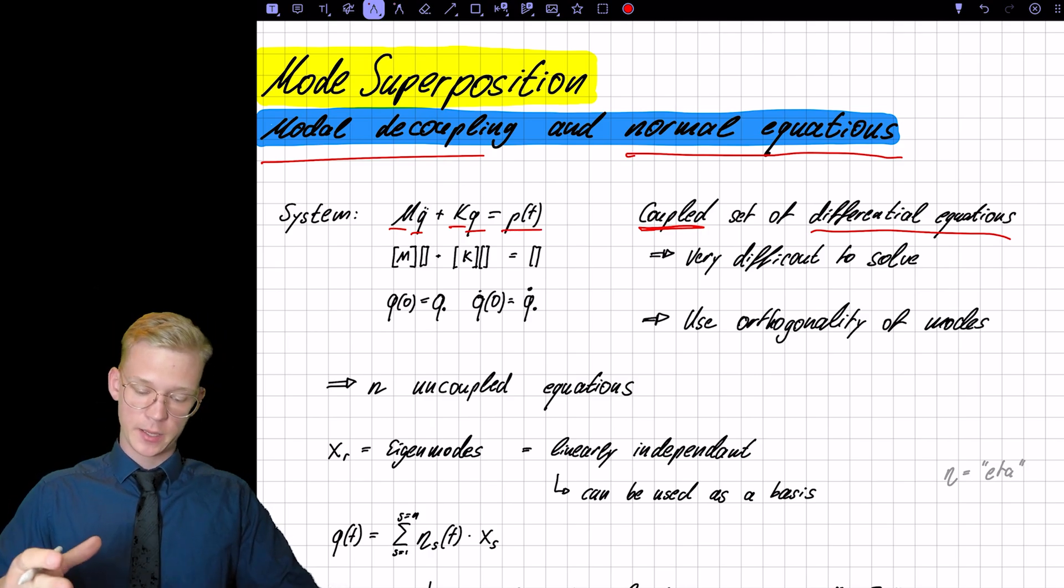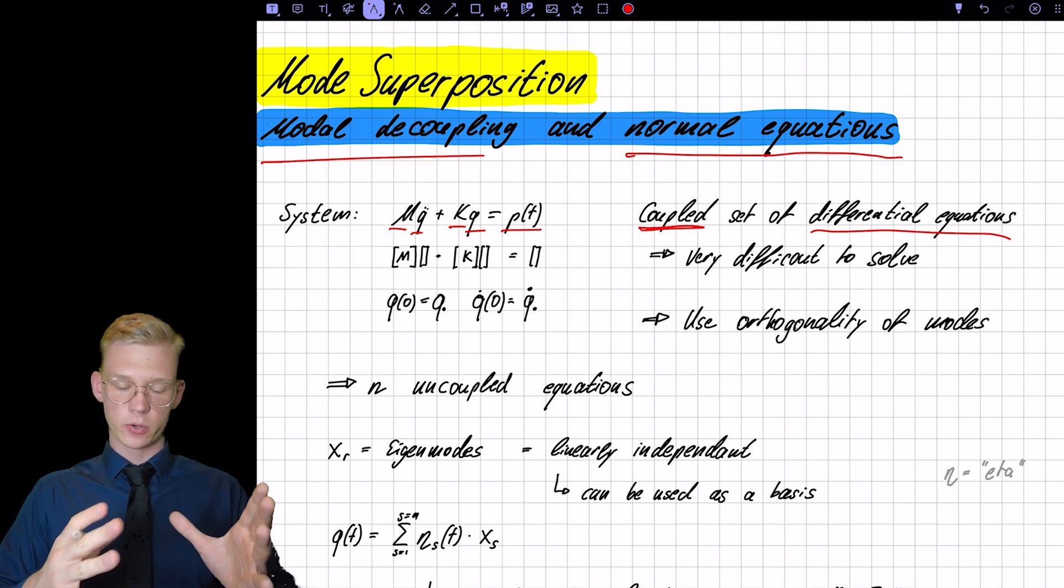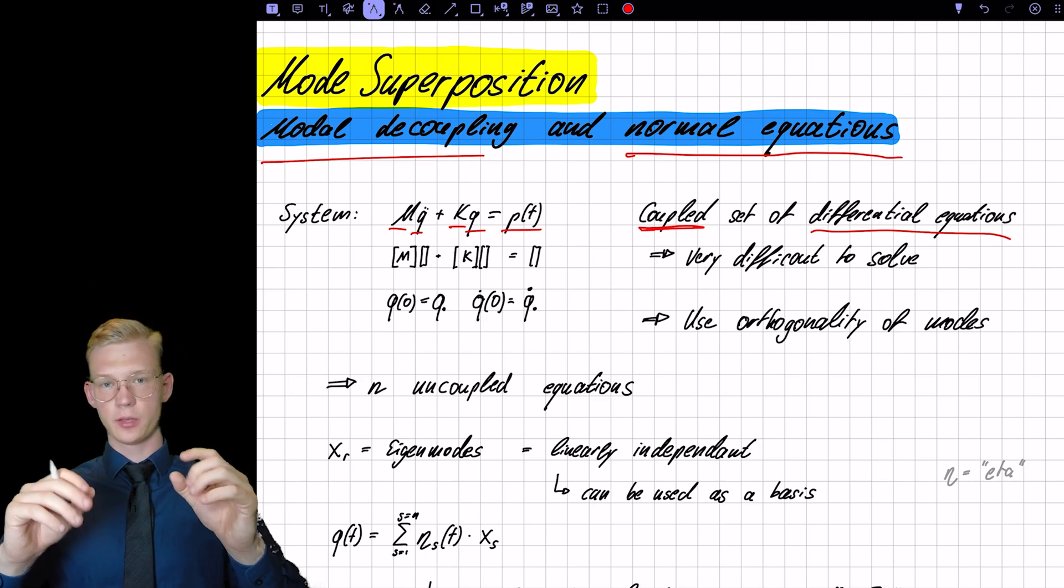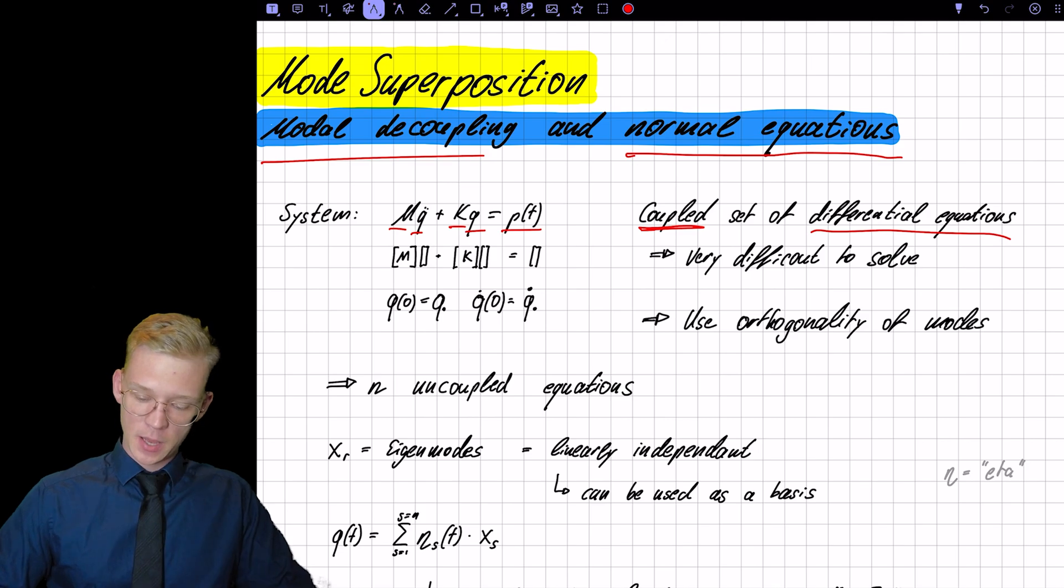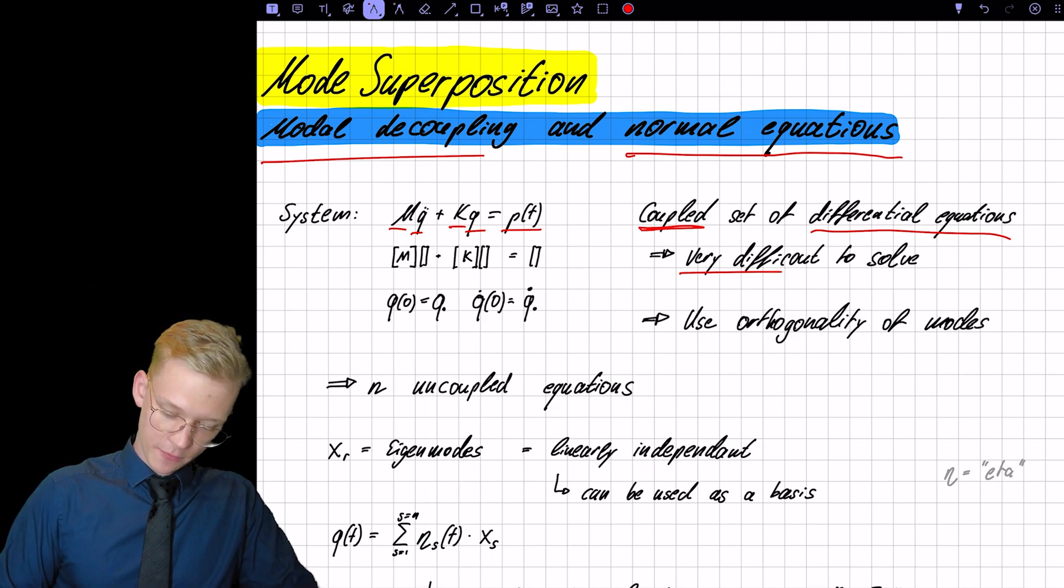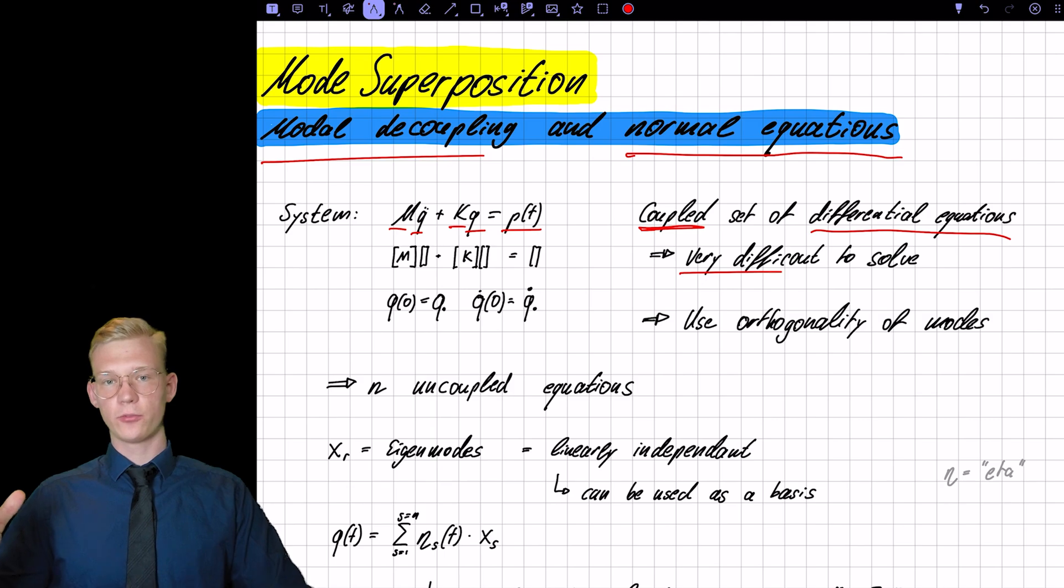And we have an additional force in our system, a force on the degrees of freedom that we have. And working with a system like that is very difficult. We have a second order differential and we have those initial conditions that we have to follow.